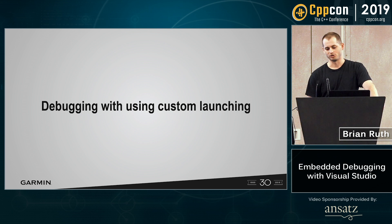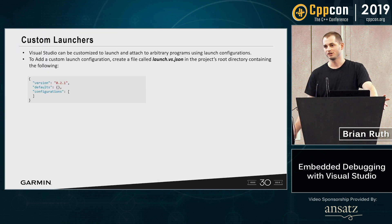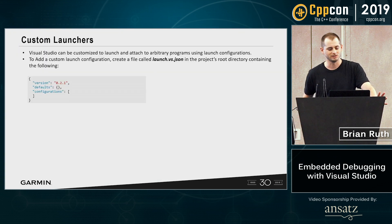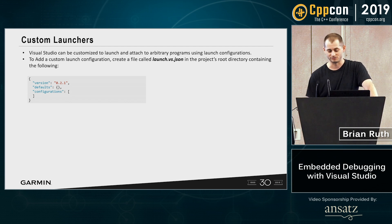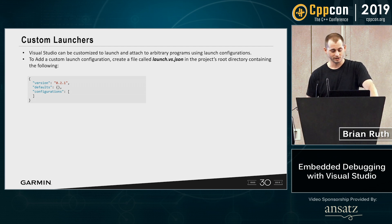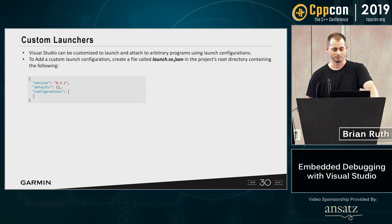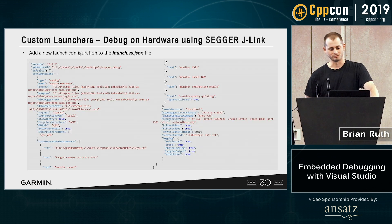Debugging using custom launching. Once we get the firmware onto the device, Visual Studio has no idea what you're using as a debugger. Conveniently, they have this launch.vs.json — again, in the project root or .vs folder — that's going to tell Visual Studio how to go about connecting to your debugger.